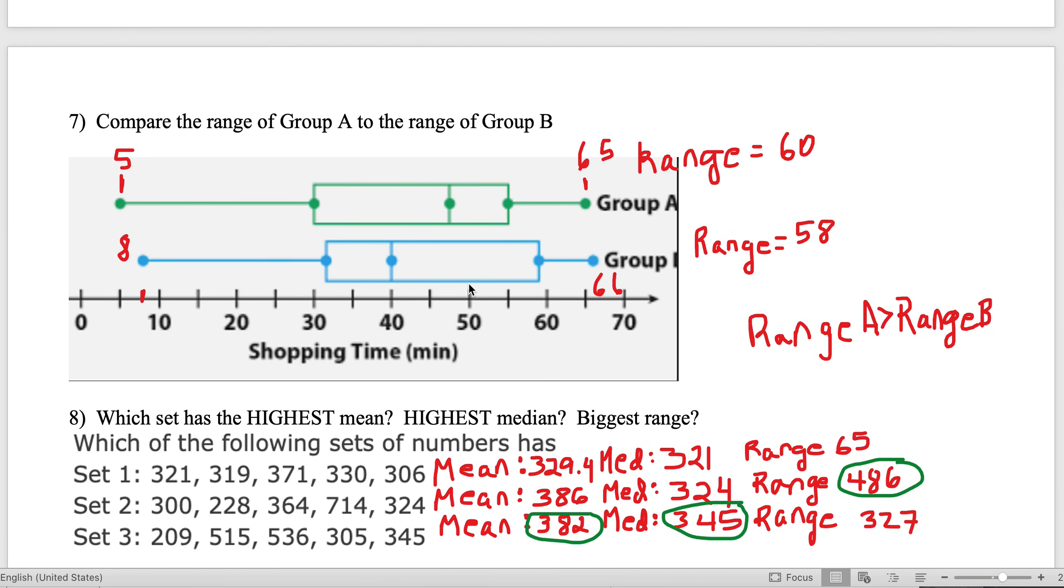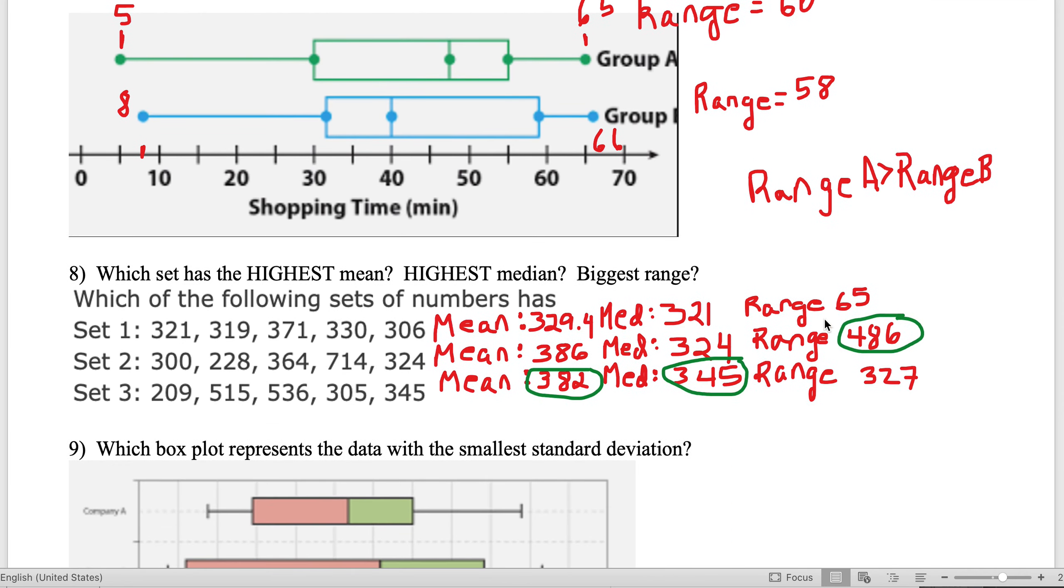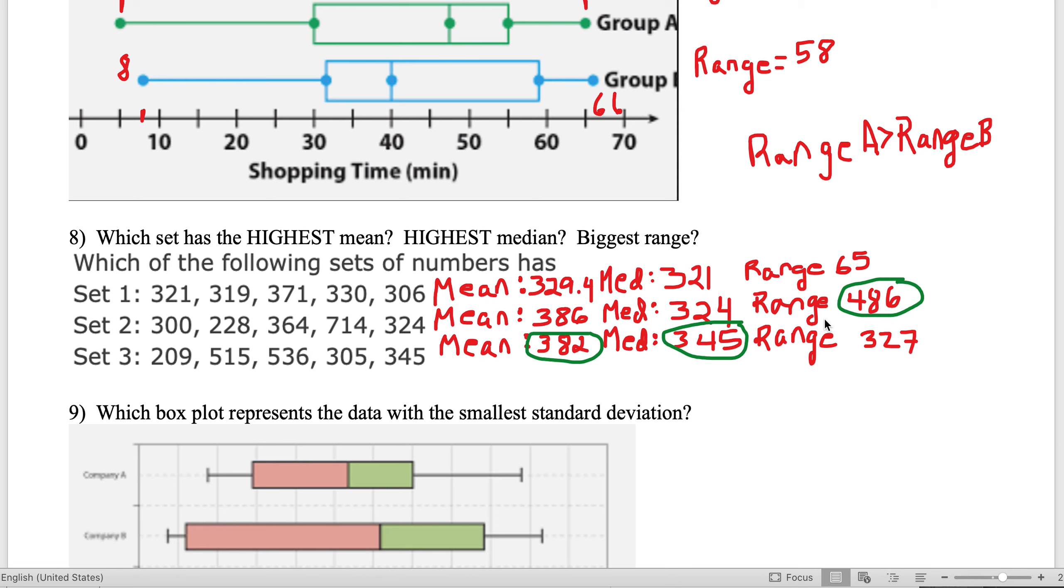Number seven: Compare the range of group A to the range of group B. The range is the max minus the min. For group A, it's 65 minus 5, which equals 60. For group B, it's 66 minus 8, which is 58. The range of A is greater than the range of B.